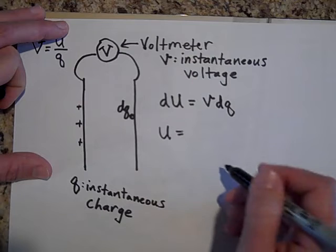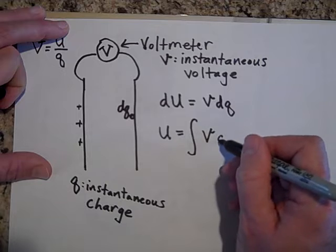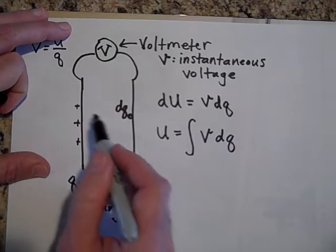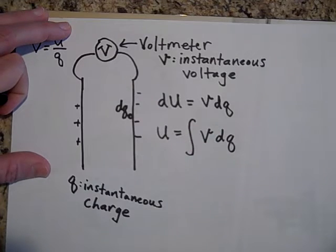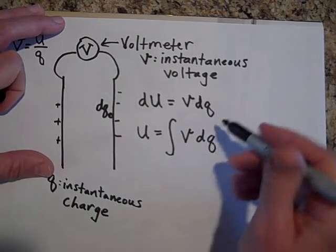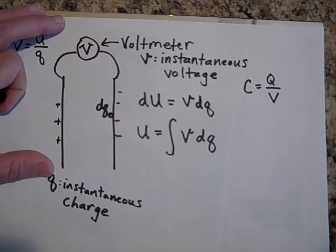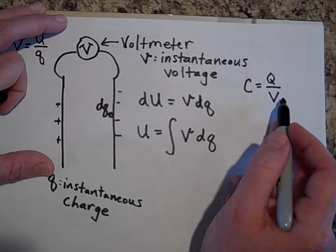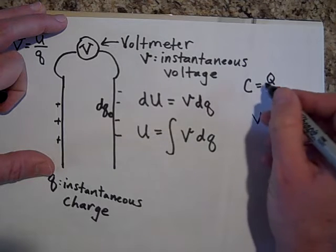Now v depends on q. How much q over there is here and here, that is going to affect my voltmeter. The more charge I put on here, the more v there's going to be. We're going to use our formula C equals Q over V. That's your basic capacitance formula. This is true for all capacitors. So if I solve for v, apparently v is equal to q over c.